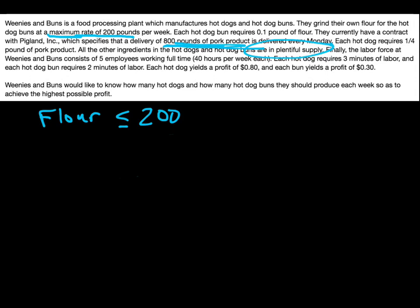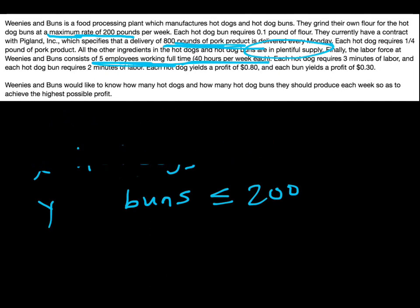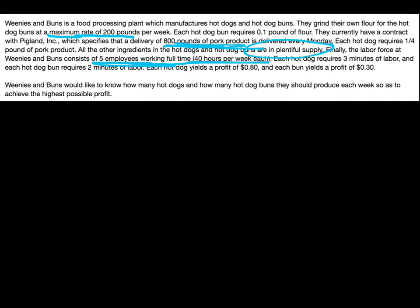And then we have a labor restriction — we only have a certain limited number of employees working a limited number of hours per week. One thing you should notice: nowhere in this problem did it say something like the number of hot dogs produced has to be at least a certain number, or that the number of buns has to stay below 200. So the restrictions are not on the variables themselves, not on x and y. That's your clue that you need to set up a chart to figure out what these constraints are in terms of the variables.